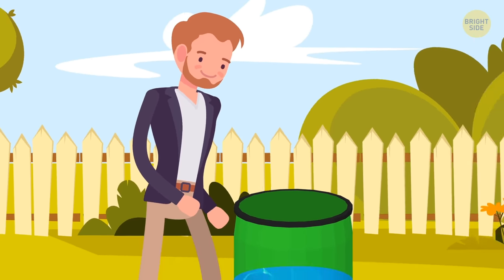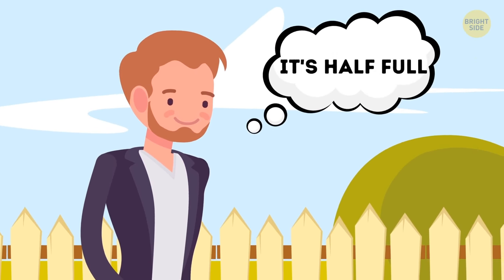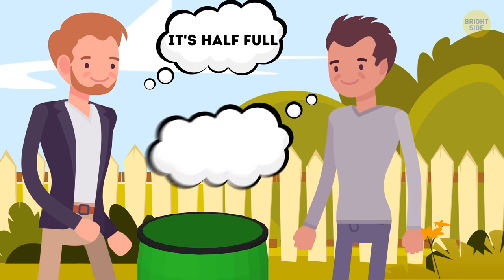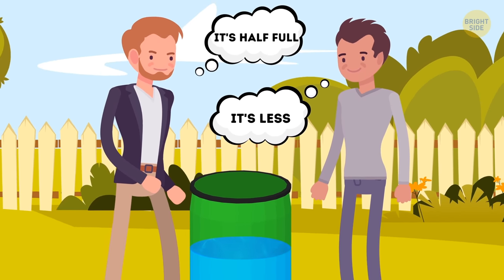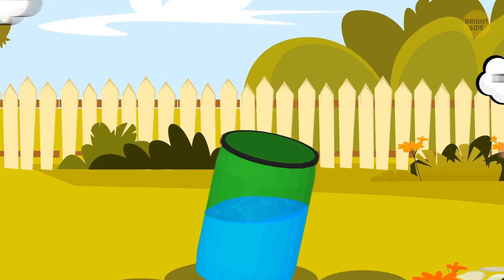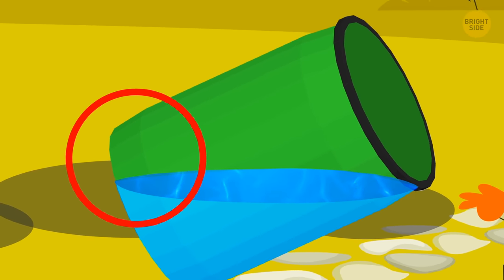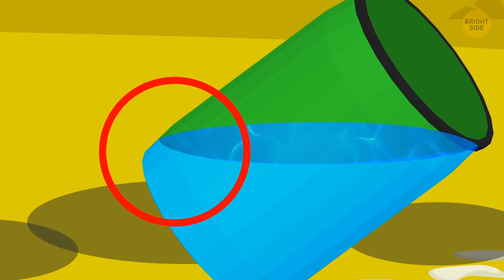There's a barrel of water in the yard. You look inside and say that it's more than half full. But your friend argues that it's less than half full. How to figure out who's right without using any measuring tools or removing water from the barrel? Tilt the barrel so that the water touches the rim. If you can see the bottom, the barrel's less than half full. If the bottom is still covered with water, it's more.